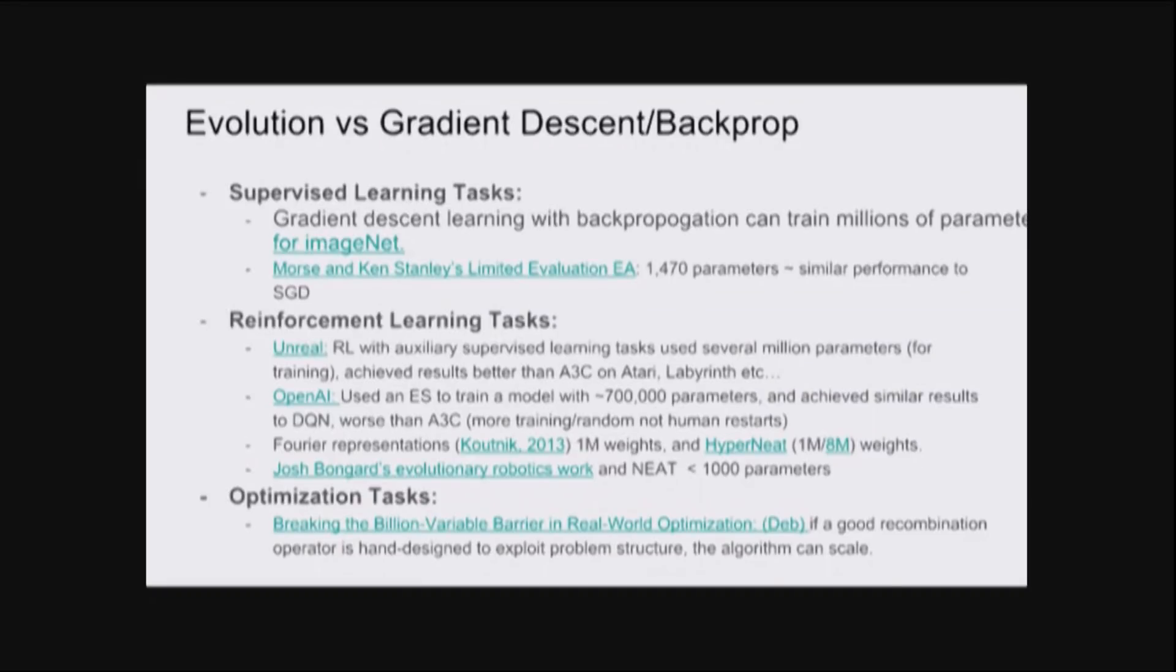That was all fine, but when we get to harder problems, such as Atari games and first-person games, then really you need to have many more parameters. For example, A3C has around 700,000 parameters. And recently, OpenAI has done a wonderful paper where they use evolution strategies to also optimize those kinds of networks.